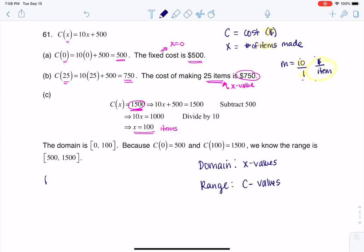So if my max budget is $1,500, and that allows me, if I want, I could make 100 items. That means I could really make anywhere between zero items and 100 items.